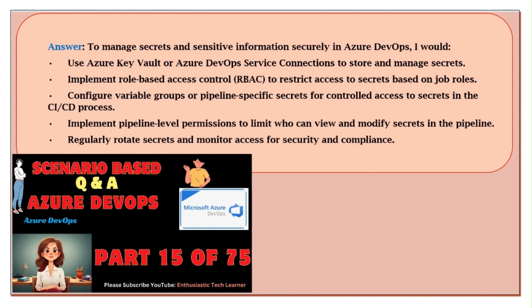Implement role-based access control (RBAC) to restrict access to secrets based on job roles. Configure variable groups or pipeline-specific secrets for controlled access to secrets in the CI/CD process. Implement pipeline-level permissions to limit who can view and modify secrets in the pipeline. Regularly rotate secrets and monitor access for security and compliance.